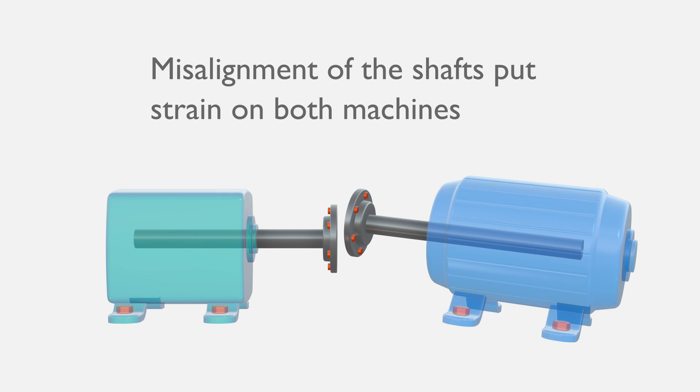Misalignment of the shafts puts strain on both the motor and the pump. It can damage the bearings, the couplings and other machine components.